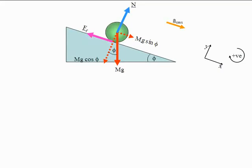In the x direction, the translational equation of motion is mg sine phi — that's the component of gravity acting down the slope — minus the frictional force acting up the slope. That is on the left-hand side of Newton's second law equation, and on the right-hand side we have the mass times the acceleration of the center of mass, that's a_cm subscript x, to indicate that it's in the x direction.